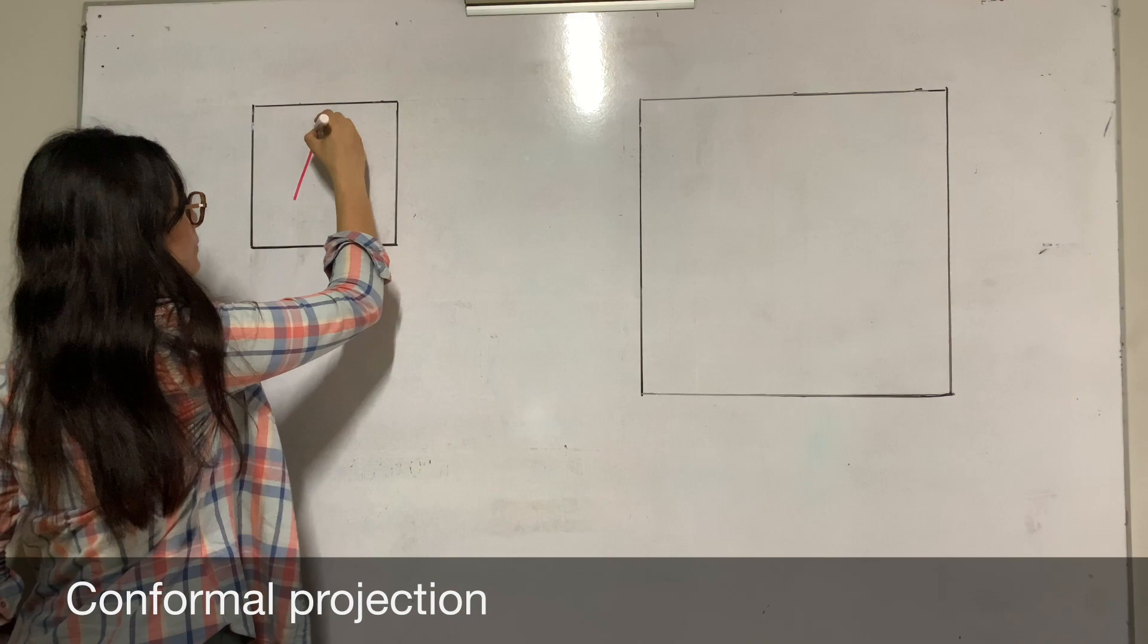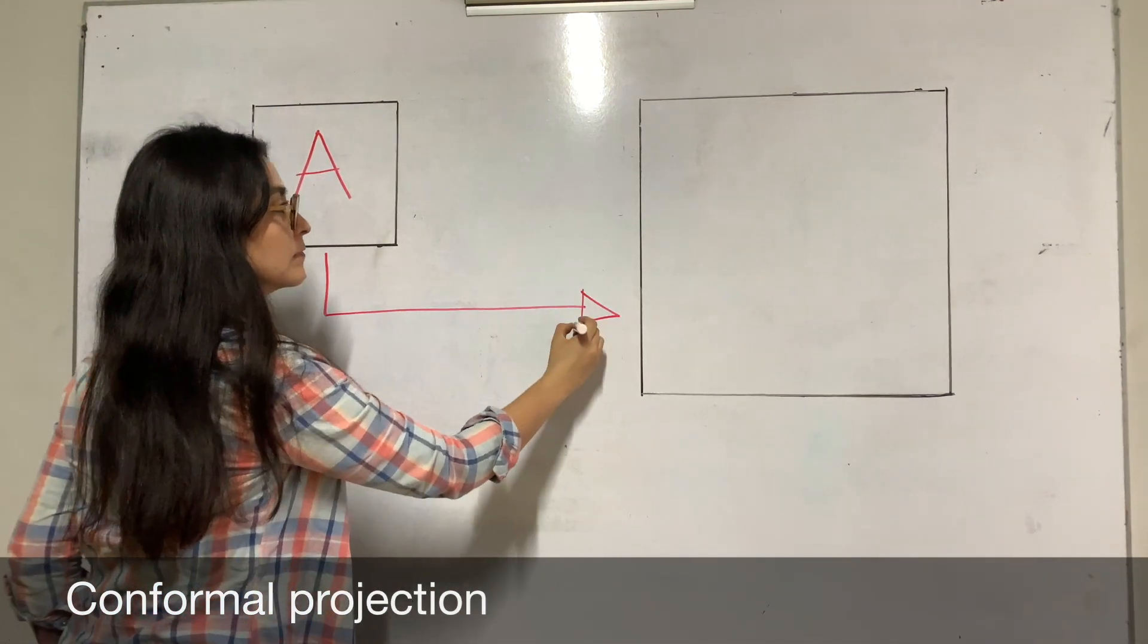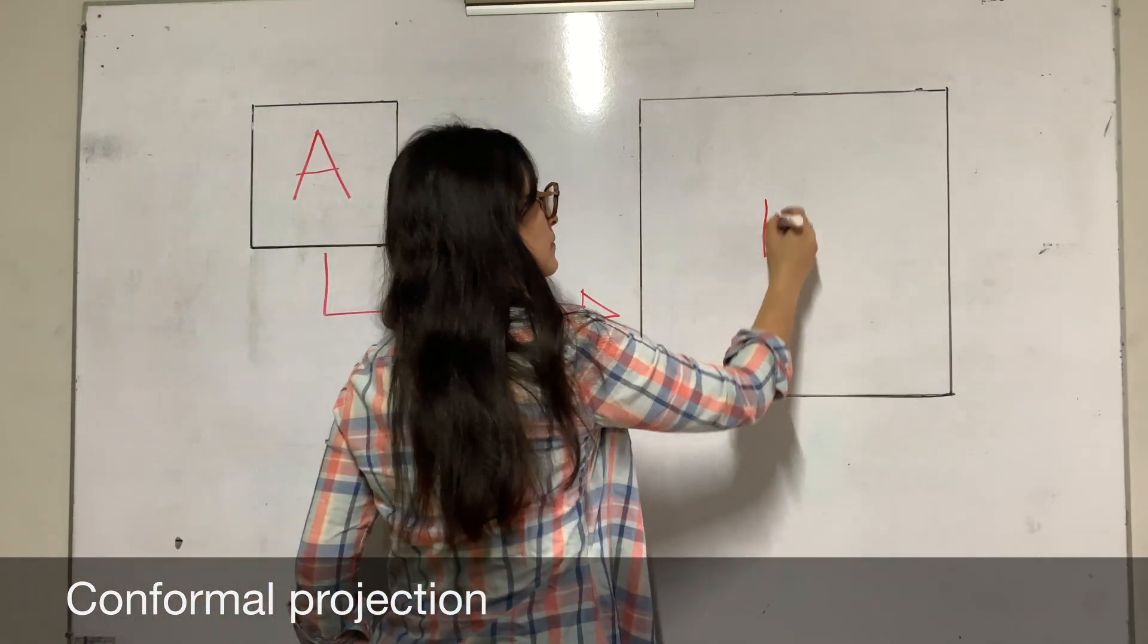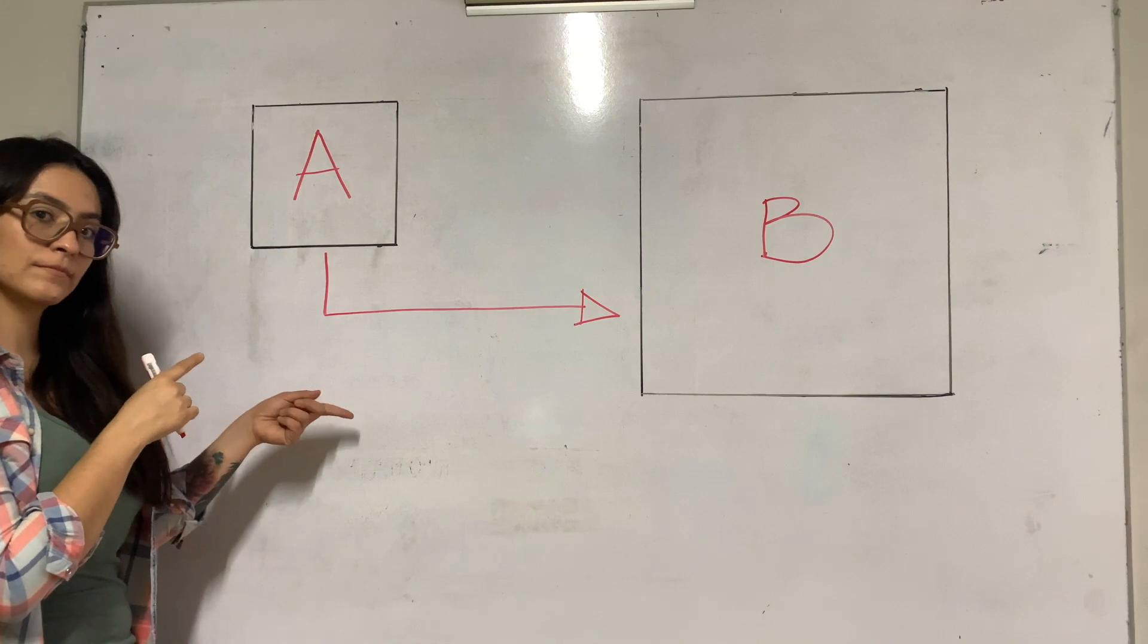Conformal projections preserve local shape and the country boundaries look the same on the map as they do on the Earth. A conformal map distorts area. Most features are depicted too large or too small.